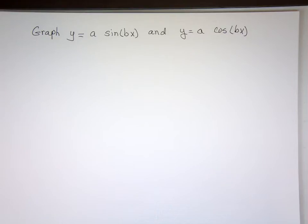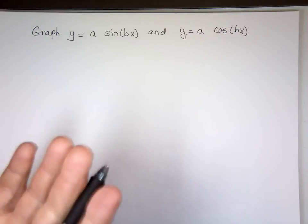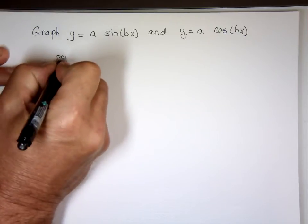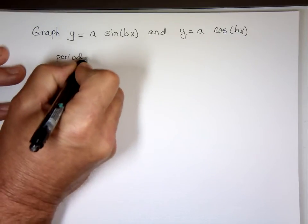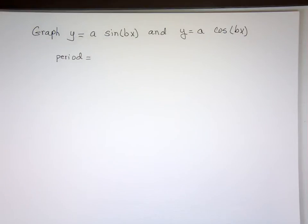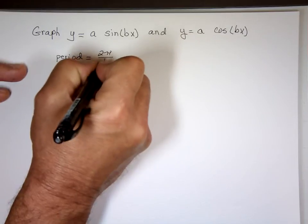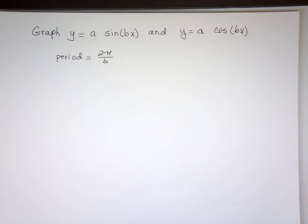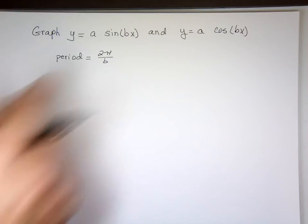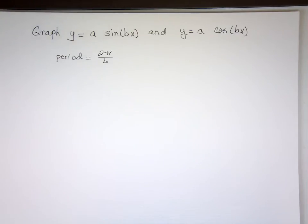B controls horizontal stretching or compressing. The normal sine function has a period of 2π, because the period is always calculated as 2π divided by B. In the previous section B was one, so it took 2π to complete one full cycle. If B is not one, it might take 3π, 4π, or half a π to complete one full cycle.